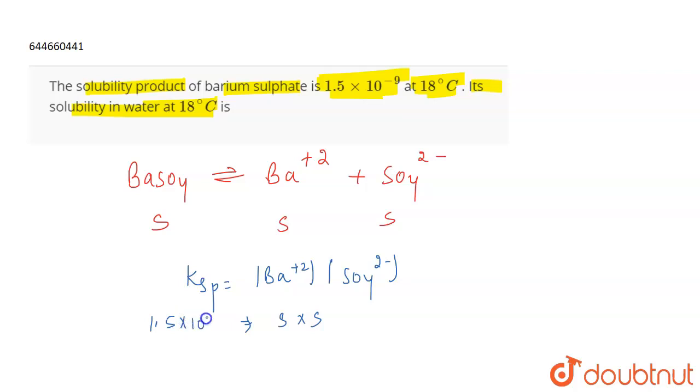Which means that s is going to be under root of 1.5 into 10 to the power minus 9, which will nearly be equal to 3.87 into 10 to the power minus 5 mole per liter.